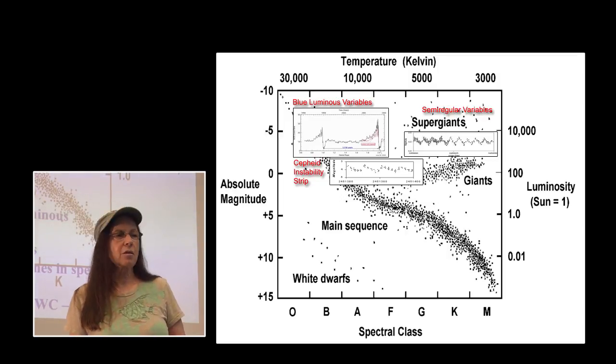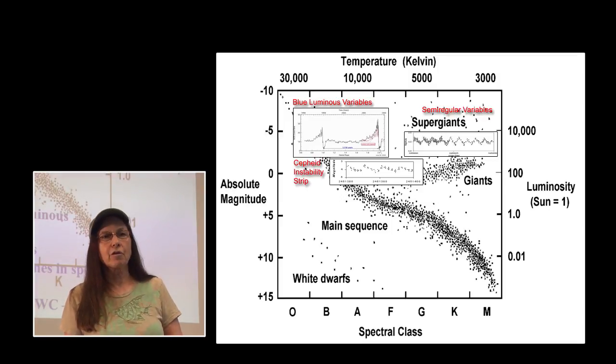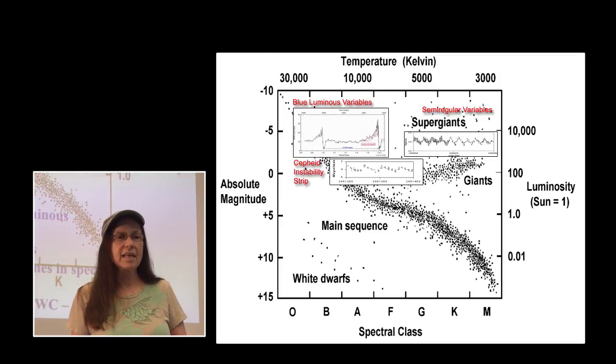We have the semi-regular variables, transitioned from the main sequence of the HR diagram through all of its stages to the semi-regular variable stage where the red giants are, where Alpha Orionis is now.